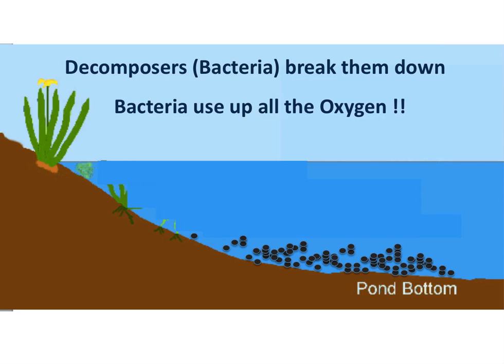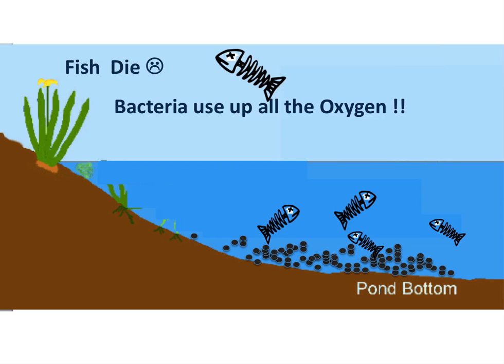Next thing you know, all the oxygen is either used up or so low that very few organisms can survive. And of course, that's what happens to the fish. In other areas that might be bigger, the fish can swim away and get to areas where there is higher oxygen. But unfortunately, organisms like clams — and if you're in the ocean, things like coral — things that can't move and are just stuck there, they're definitely stuck, and without any oxygen, they'll die.